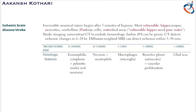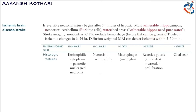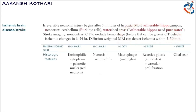For stroke imaging, a non-contrast CT of the brain is majorly used to exclude hemorrhage. This is done before tPA can be given, and CT detects ischemic changes in six to twenty-four hours. Diffusion-weighted MRI can detect ischemia within three to thirty minutes, making MRI the faster method to determine ischemic stroke.